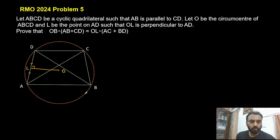Prove that OB times, OB is basically radius, OB is R. If I represent its radius by small R, so R is a radius OB. Then what we have to prove that R times (AB + CD) is equal to OL times (AC + BD).